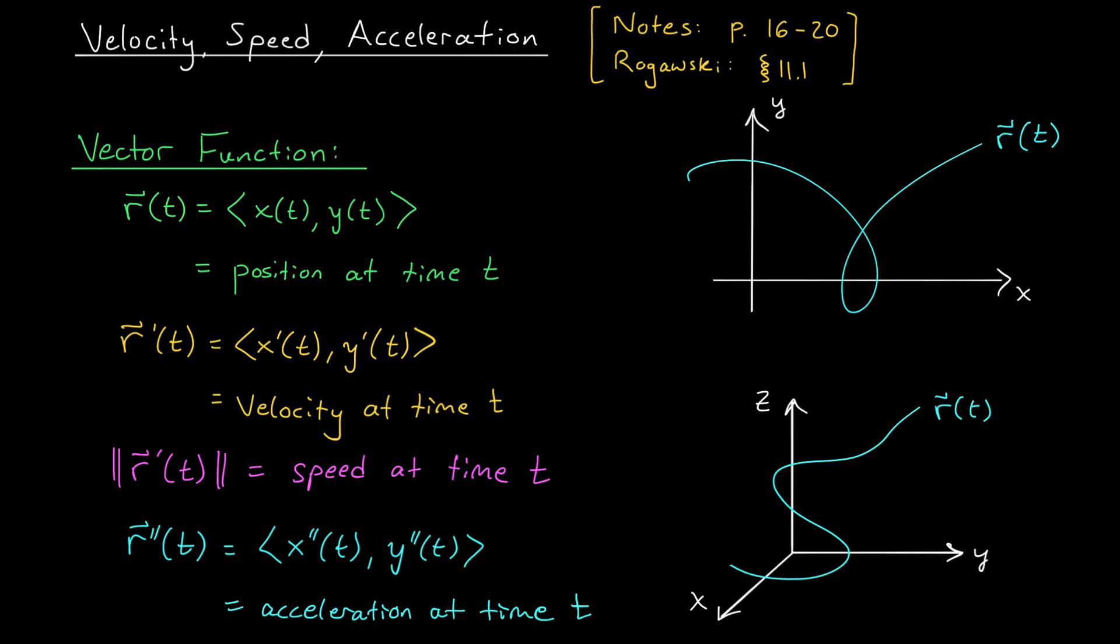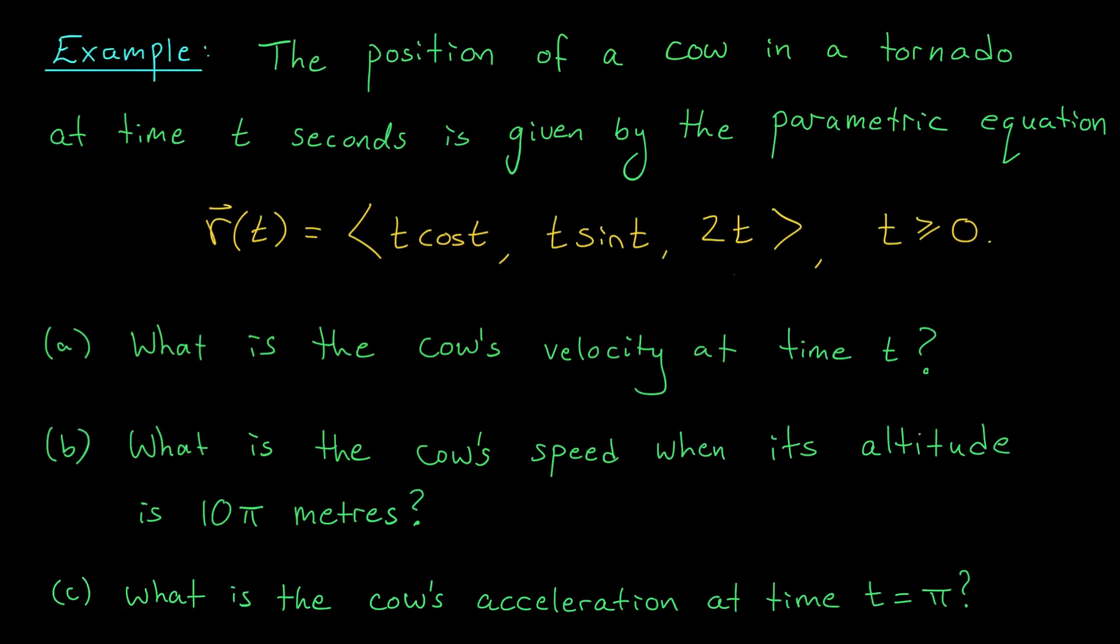Okay, lots of information. Let's put it to use in an example. All right, folks. This example is going to put all of our knowledge from the previous slide to use. Here, we're dealing with a cow trapped in a tornado. At time t seconds, its position is given by the vector function r of t shown here.